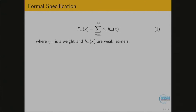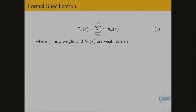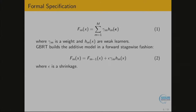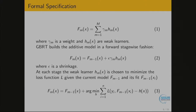A little bit of equations. The formal specification is an additive model: we have a sequence of trees, each tree is weighted by gamma, and they combine through that weight. We build an additive model in a forward stage-wise fashion, adding each tree sequentially with parameter epsilon — the shrinkage, also known as learning rate. The learning rate controls how fast we descend along the gradient. At each stage, the weak learner is chosen to minimize a loss function — in my case, least squares — and this is evaluated by negative gradient descent.